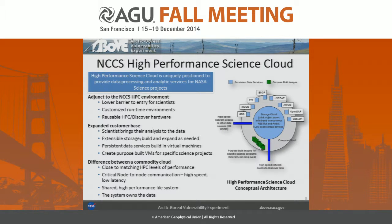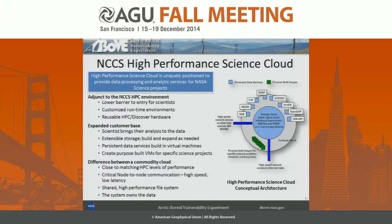So what are we building? We're building a high-performance science cloud — or science cloud, or ABOVE cloud. We use those interchangeably at the moment. It's a really exciting project bringing a lot of capability to the science community, specifically for the ABOVE campaign and others beyond that. It's adjacent to the NCCS high-performance computing environment. This is a virtual machine environment, not exactly like an Amazon cloud. We provision the resources for you, which lowers the barrier for scientists to get in and use it.